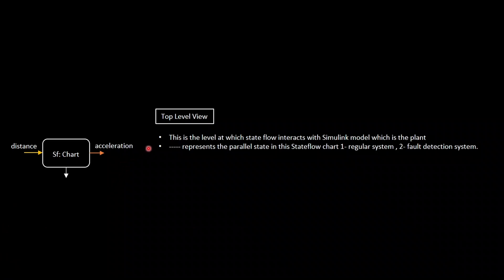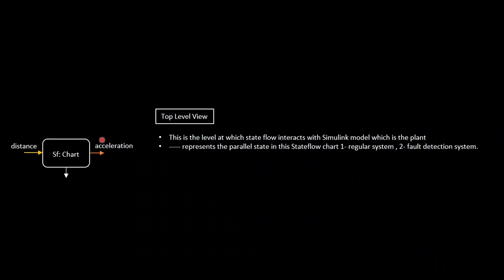There will be two states present that will be acting and executing in parallel. Those boxes will be drawn with a dotted line. One will be a fault detection system and one will be the regular system. The fault detection system observes what faults are present in the system during execution, while the regular system executes the control logic in the state flow chart. The state flow interacts with the Simulink environment, receiving distance as input and giving acceleration as output.